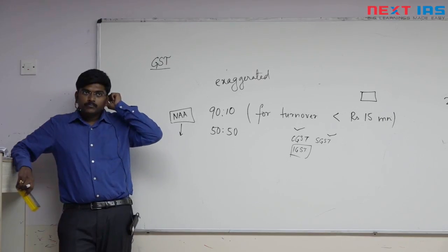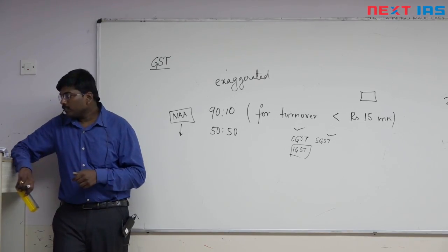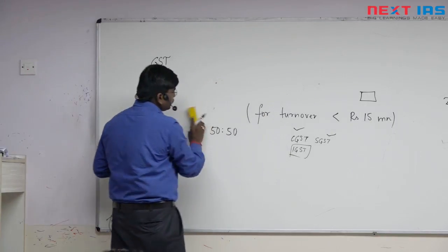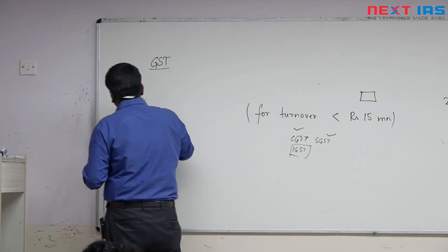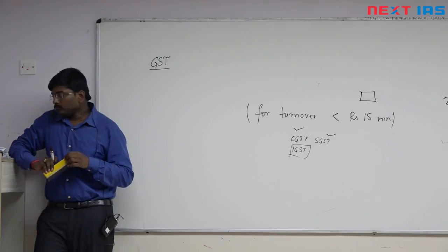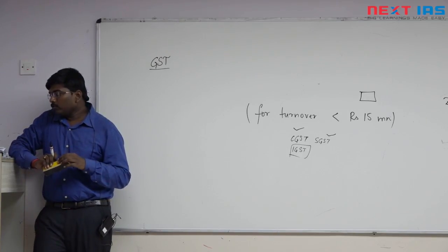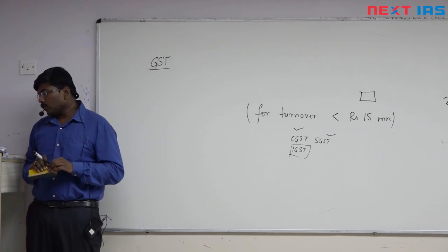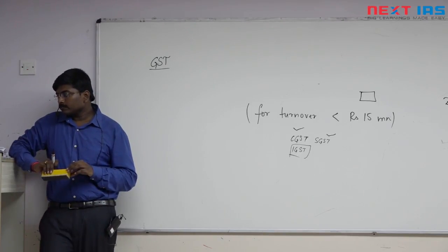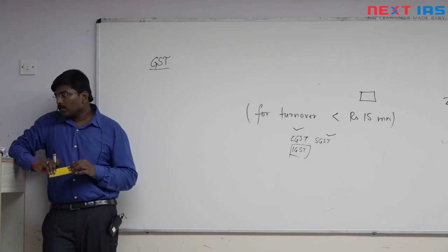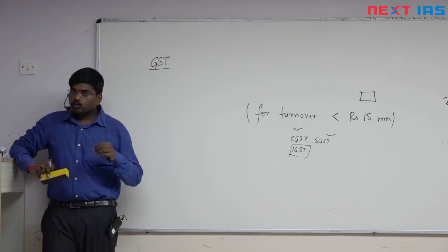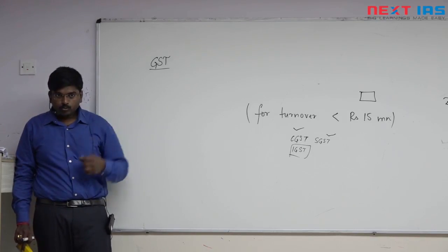There were certain changes made by the government. The first change was a reduction in GST rates. The GST Council recommended reducing the number of items under the 28% tax slab from 224 to 50.